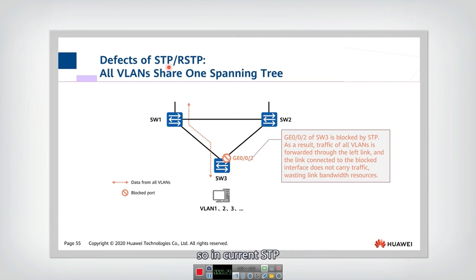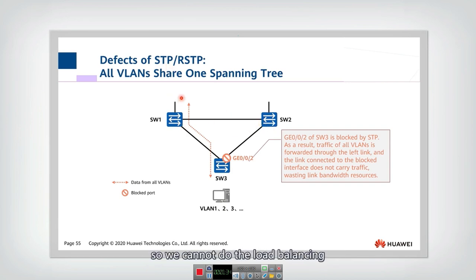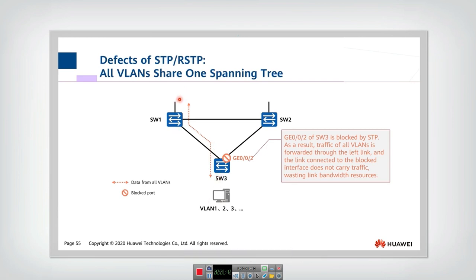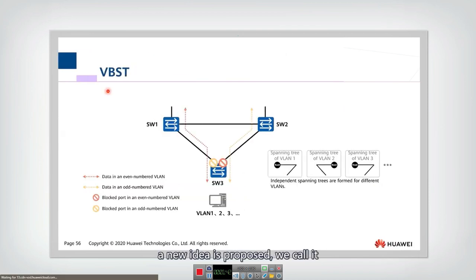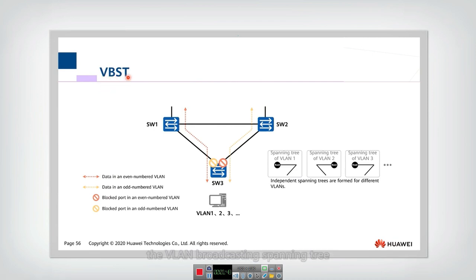So this is one problem in current STP. In current STP, only one spanning tree can be constructed, so we cannot do load balancing. To solve this problem, a new idea is proposed: we call it the VLAN-based spanning tree.